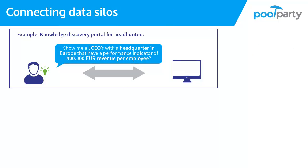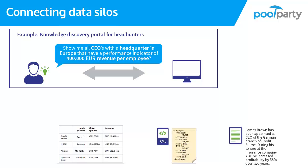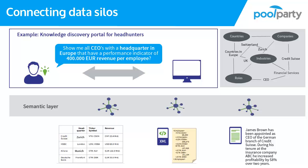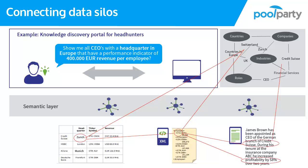Let's take another example. A headhunter is searching for a CEO candidate in the financial sector. His company has established a semantic knowledge discovery portal that bundles different data sources to deliver high-quality results. The different data sources are linked through a semantic layer, and there is a knowledge graph in place that models the knowledge domain around human resources. It is the knowledge graph that defines relevant metadata and recognizes relevant entities across different documents and data sources, while the semantic layer maintains this metadata separately.